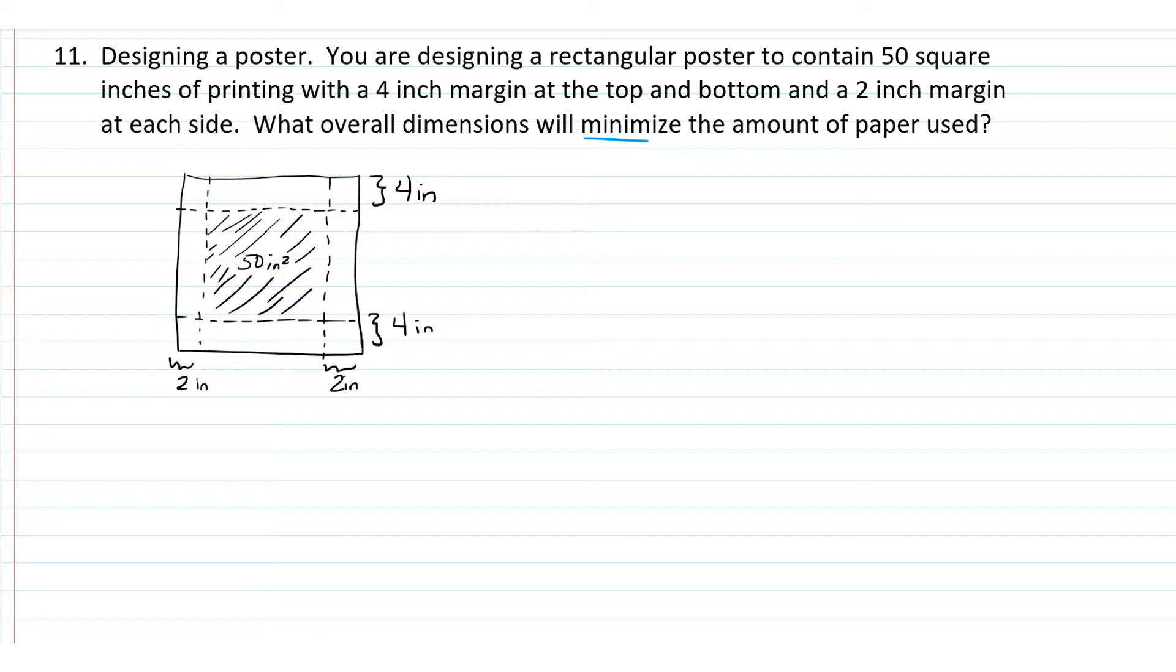We're trying to minimize the amount of paper used, so we're really trying to minimize the area of the entire paper. Let's give some names to the dimensions here. Let's suppose that we call the dimension along the side X, and the dimension along the bottom Y. So the area of the paper is going to be X times Y.